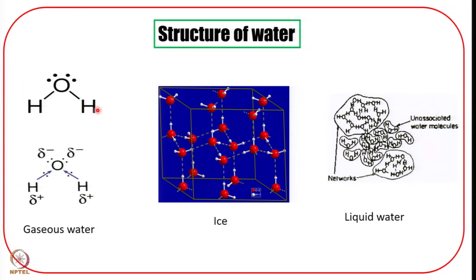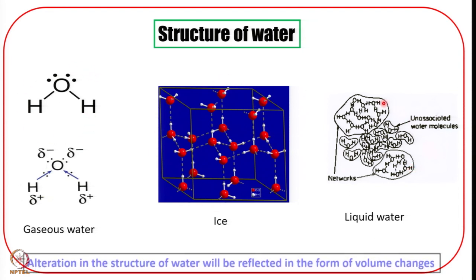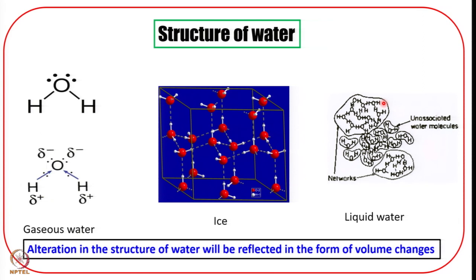So gas has individual water molecules, ice has a regular tetrahedral network, and liquid water has an in-between structure. The statistical thermodynamics which we largely discussed earlier was for the gaseous system. Can we apply statistical thermodynamics to the condensed systems? Condensed system means either we talk about liquid or further condensed or compact system, which is solid. With this difference in structure between the gas, ice, and liquid water, let us see what kind of further treatment can be done.